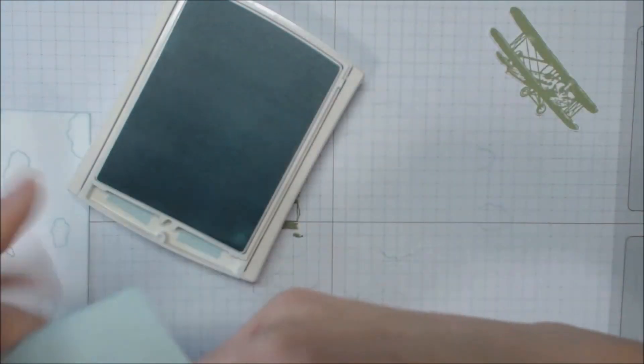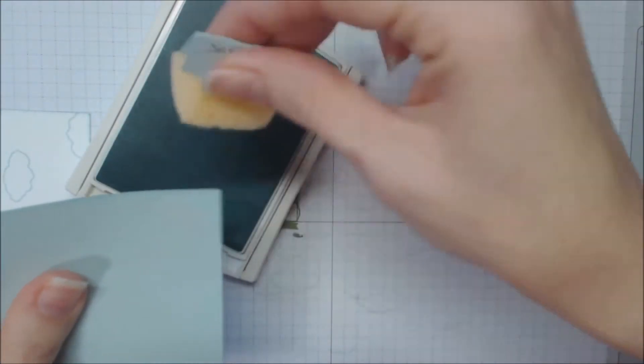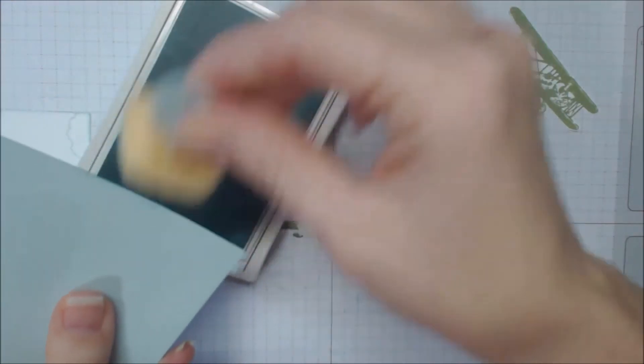I'm also taking a piece of soft sky that is three and three eighths by four and a half. And I'm going to sponge all four edges of that as well. I just like the way it looks. You don't have to. This is purely optional.